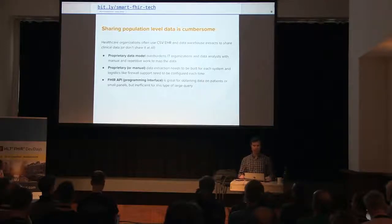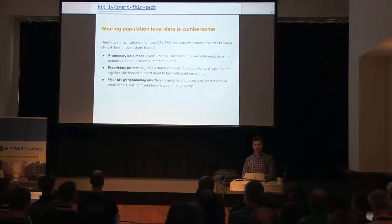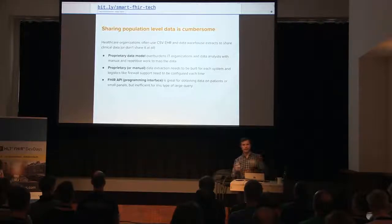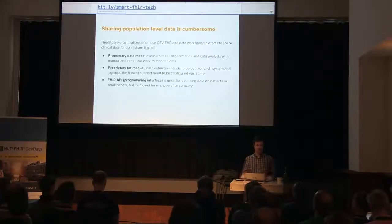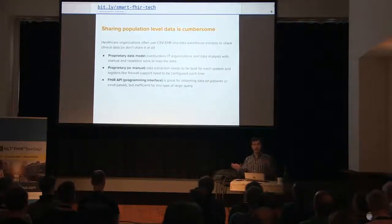The common approach today takes a lot of hard work and is cumbersome. People typically come up with some kind of scheme — usually a comma-separated value file. They get on the phone and agree on exactly what columns to extract. Someone on the database administration side writes a report, and they agree on a way to share it — maybe an FTP job running daily or weekly with agreed credentials or a VPN. This process repeats over and over, and it's highly inefficient with proprietary data and manual, proprietary ways of moving that data around.